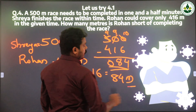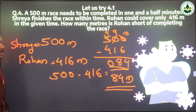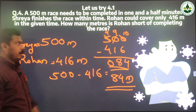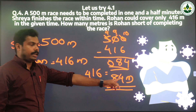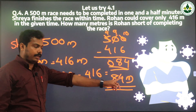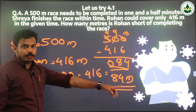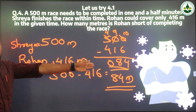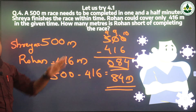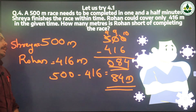So how many meters is Rohan short of completing the race? He is 84 meters away from the finishing line.